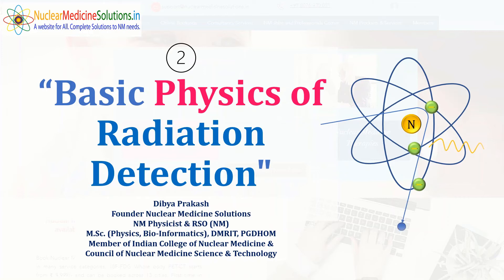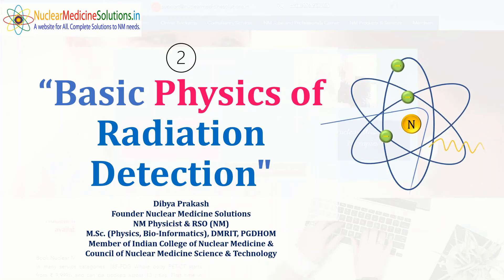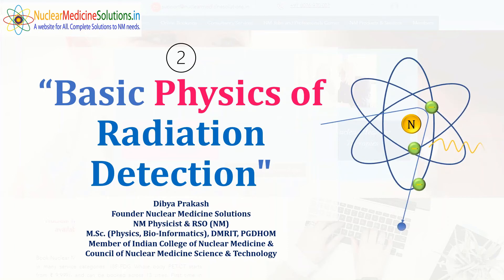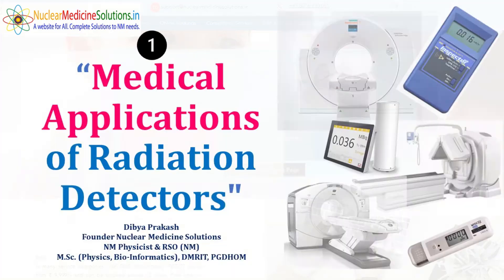Hi, this is DB Prakash from Nuclear Medicine Solutions. This is the second video of the radiation detectors series. In this video we are going to discuss the basic physics of radiation detection, where we will discuss various interactions of radiation with matter and how different radiation detectors like GM counters, survey contamination monitors, dose calibrators, pocket dosimeters, gamma camera, PET-CT, PET-MRI, and CT detectors work.